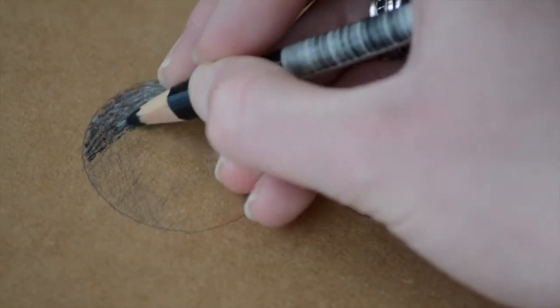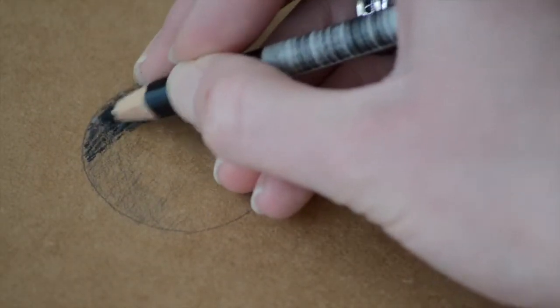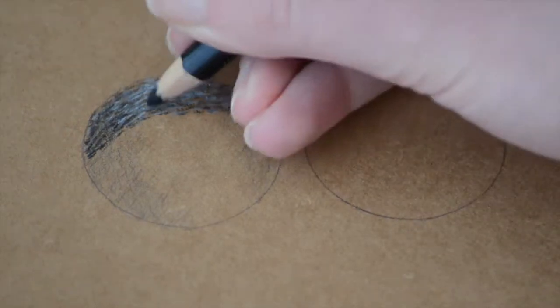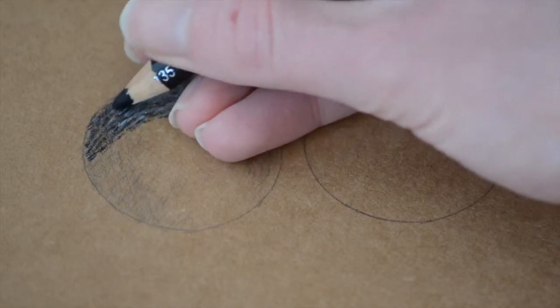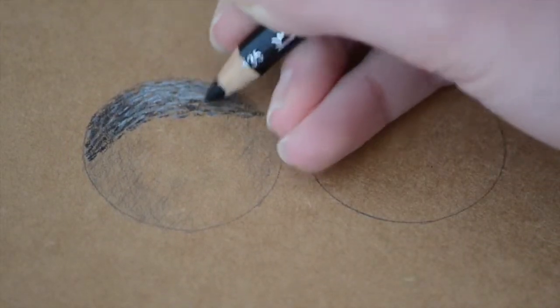And what this will do is it will slowly but surely fill more and more of those little paper gaps where the paper is showing through, and it will create a denser look to the fur and it will obviously build on tone.